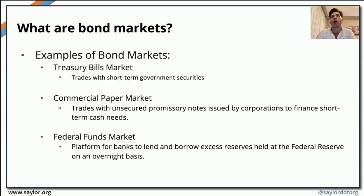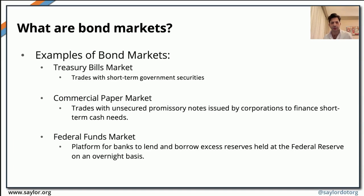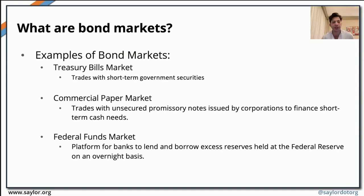Some prominent examples of bonds: treasury bills, or T-bills, are short-term government securities issued by the government. Commercial papers are markets that trade with promissory notes dedicated for corporations to help them finance their operations on a short-term basis. The federal funds market is where banks and financial institutions required to hold deposits at the Federal Reserve lend or borrow excess reserves on an overnight basis.